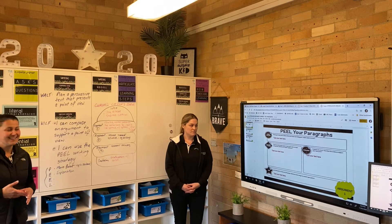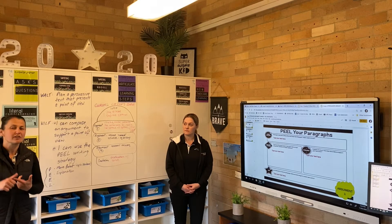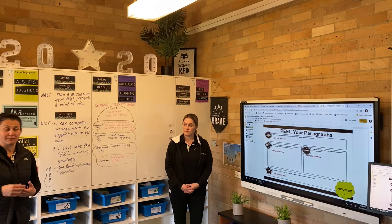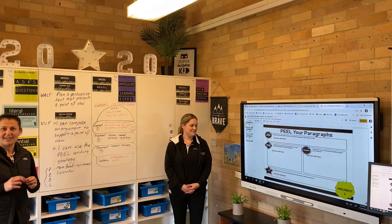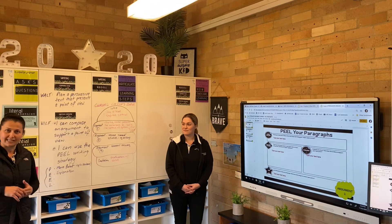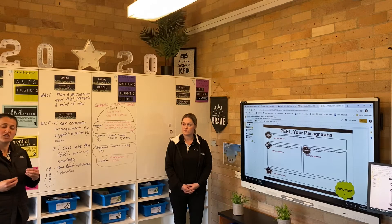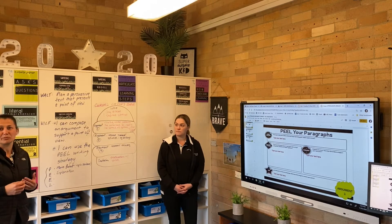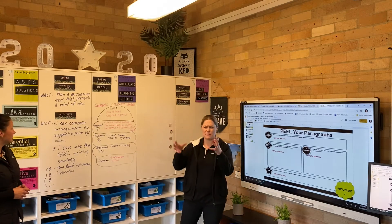The second E stands for evaluate — so how does that evidence, how do those statistics, how does that expert opinion back up the main point you put for P? And then at the end you need a linking sentence, which is what L stands for. That's going to link that point to the next paragraph. Sometimes you can tie that back in with your topic as well, and you'll think of ways to connect your points together, which helps the flow of your persuasive piece so it's not jumping all over the place.